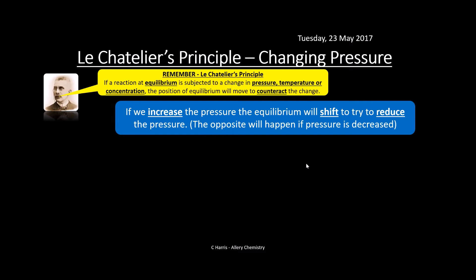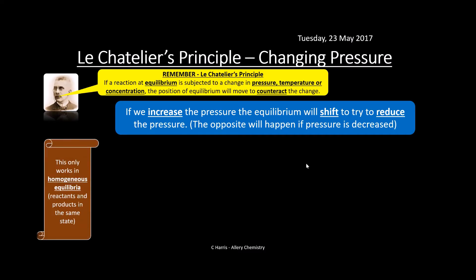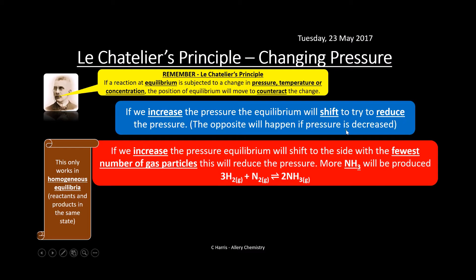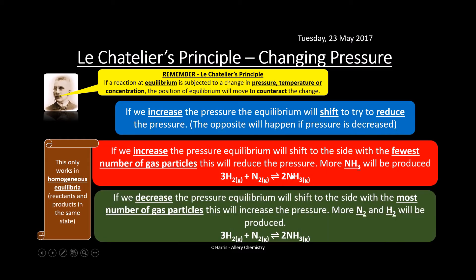If we increase the pressure, equilibrium will shift to try and reduce the pressure — again only in homogeneous equilibria. Equilibrium shifts to the side with the fewest number of gas particles. In the Haber process we have four molecules of gas on the left and two on the right, so increasing pressure shifts equilibrium to the right producing more ammonia. Decreasing pressure shifts equilibrium to the left — toward four moles of gas — producing more nitrogen and hydrogen.